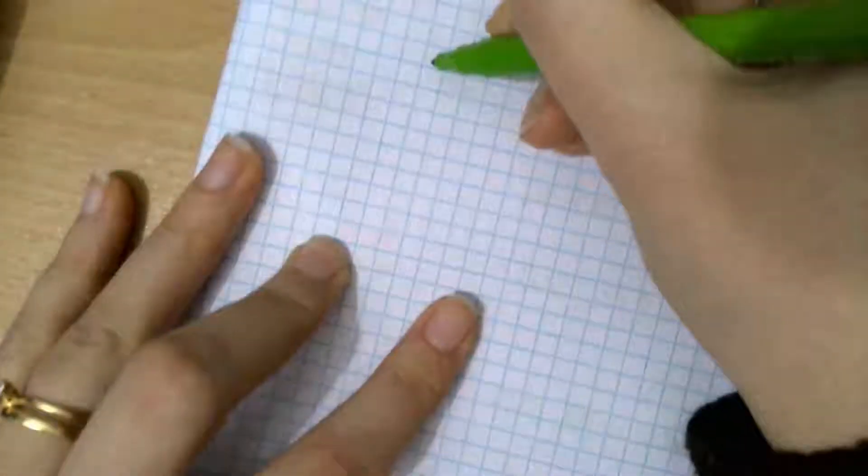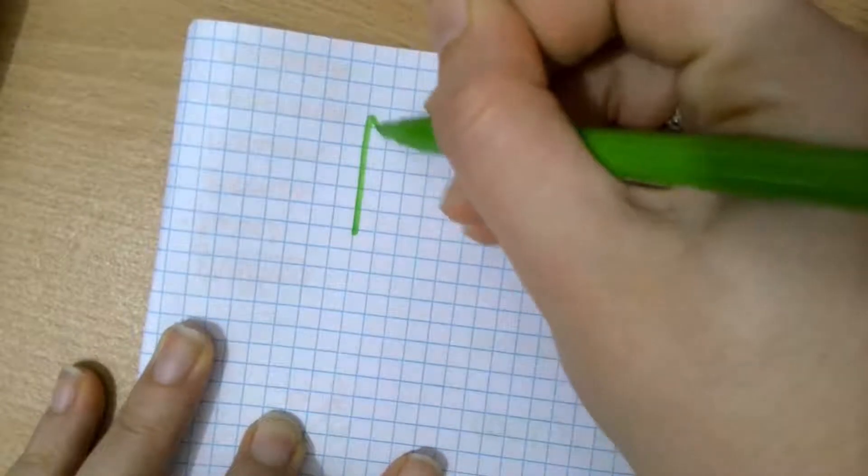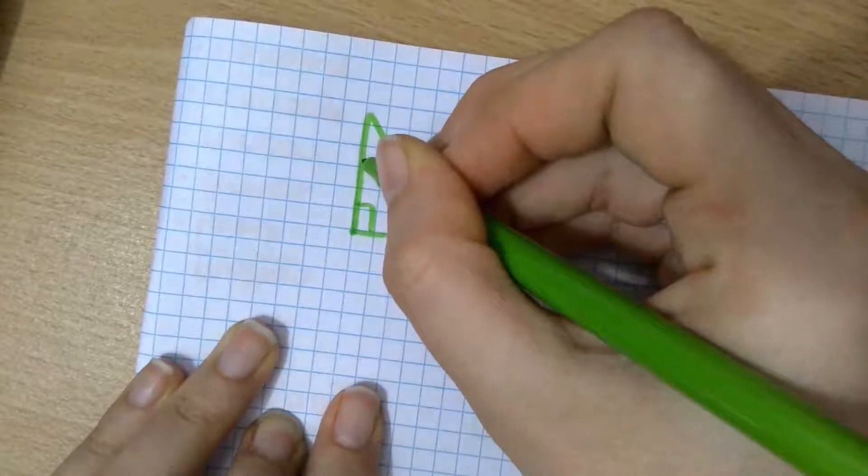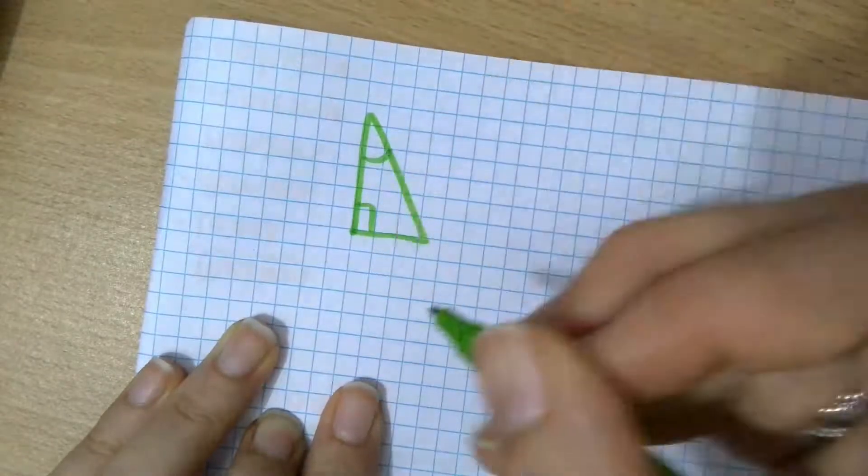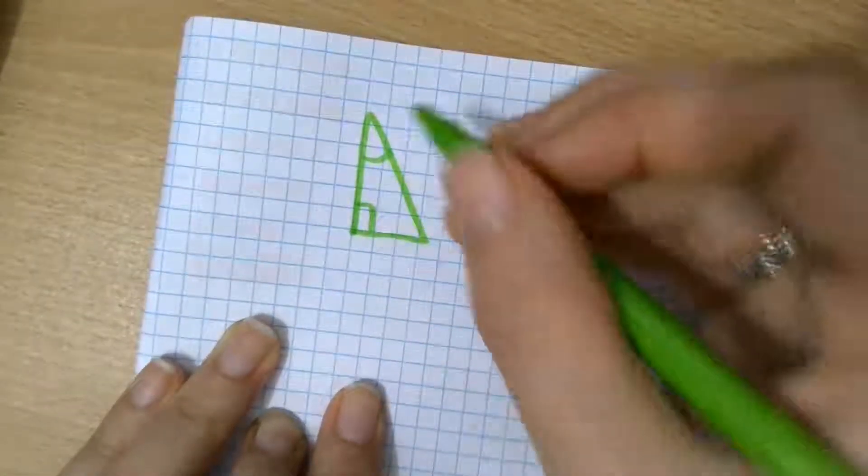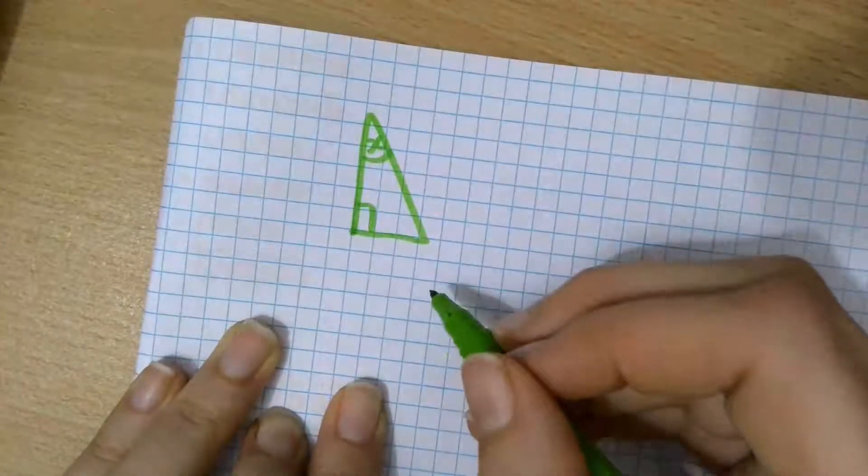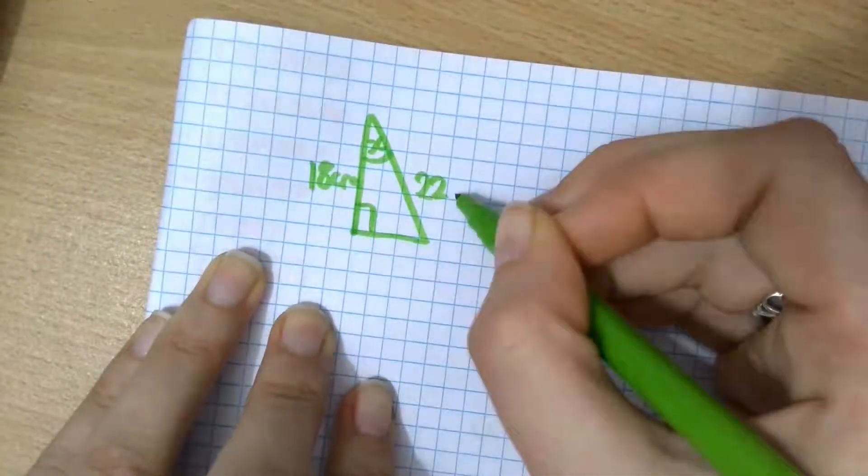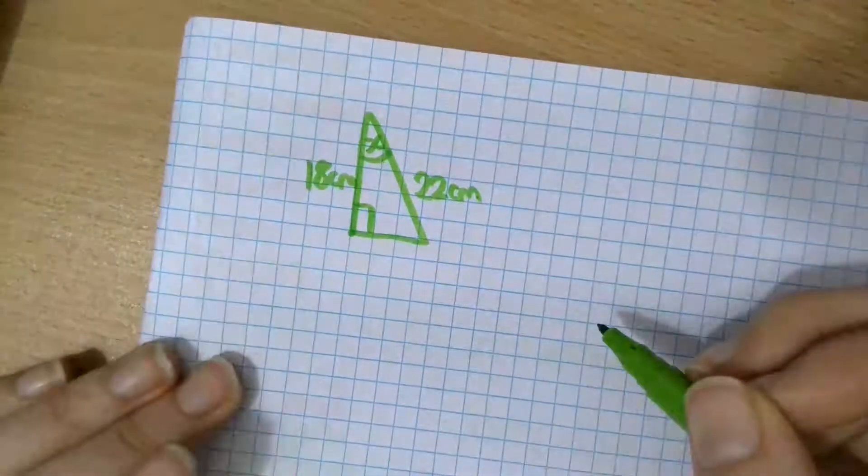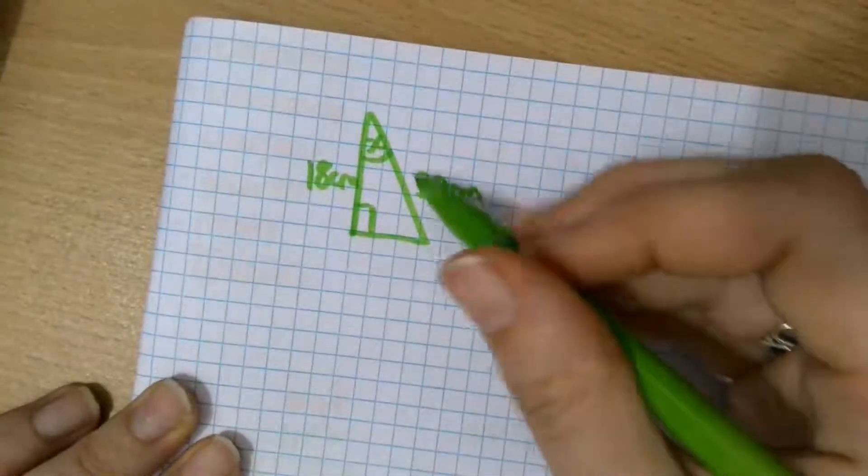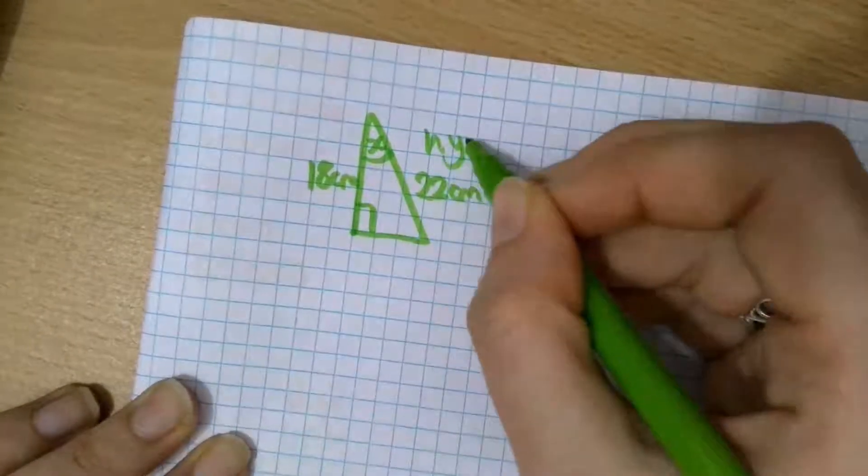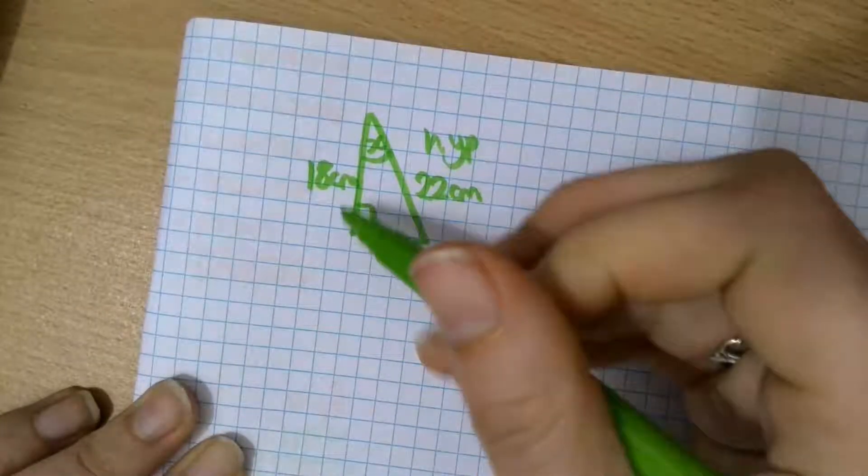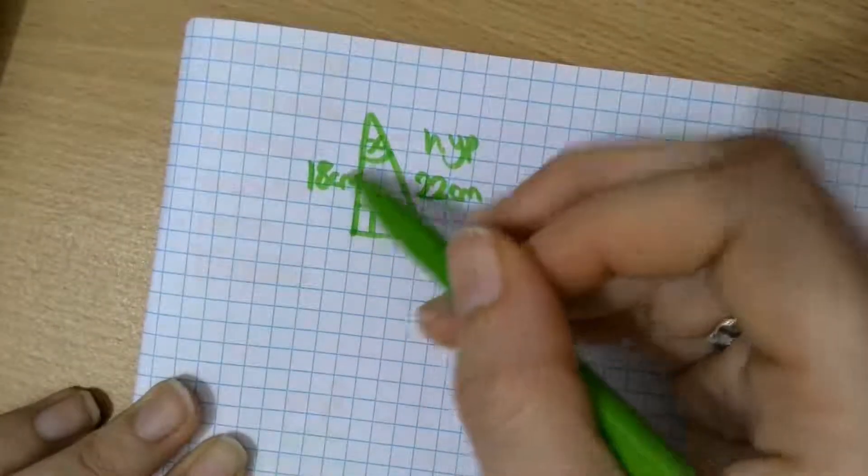So here is another right angle triangle. This is my angle X. This is 18 centimeters. And this is 22 centimeters. So, first step. Label. 22 is the hypotenuse. Opposite the angle is nothing. So we're not fussed about that. We're going to ignore that. And this side here is the adjacent side.